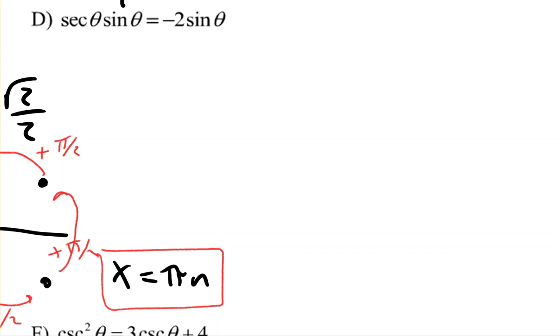Okay, so on D, we've got secant of an angle times the sine of the same angle, so it's to be equal to negative 2 times the sine of the angle.